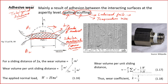Temperature rise leads to a reduction in mechanical properties, especially yield strength. The material will become soft and very easy to adhere to each other. In a rough analysis, if the sliding distance is 2a, the wear volume is given by the volume of a hemispherical particle. Volume per unit sliding distance is derived from this, and if we write the applied normal load in terms of hardness — hardness multiplied by πa² — we can combine the equations.